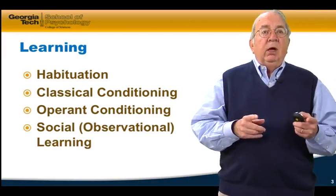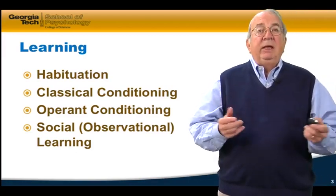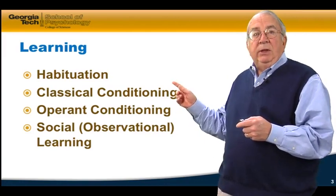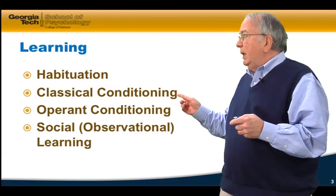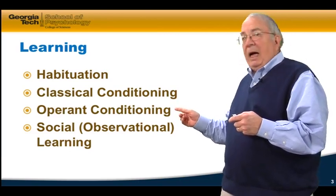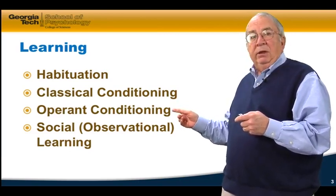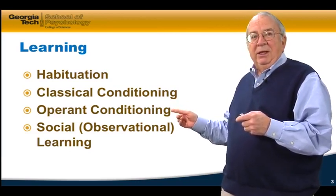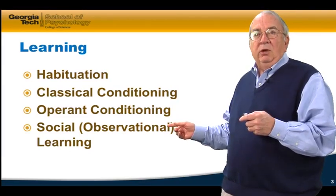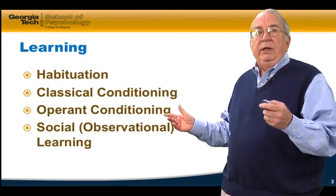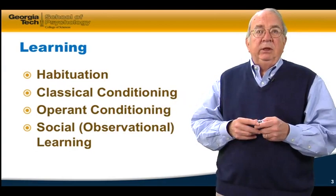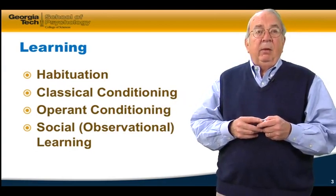When we talk about learning, we talk about different kinds of learning. We can talk about habituation, which is really the simplest kind of learning. We'll talk about classical conditioning or Pavlovian conditioning. We'll talk about operant conditioning or Skinnerian conditioning. We'll talk about social learning or observational learning. All of these are ways in which we can acquire information from the environment.